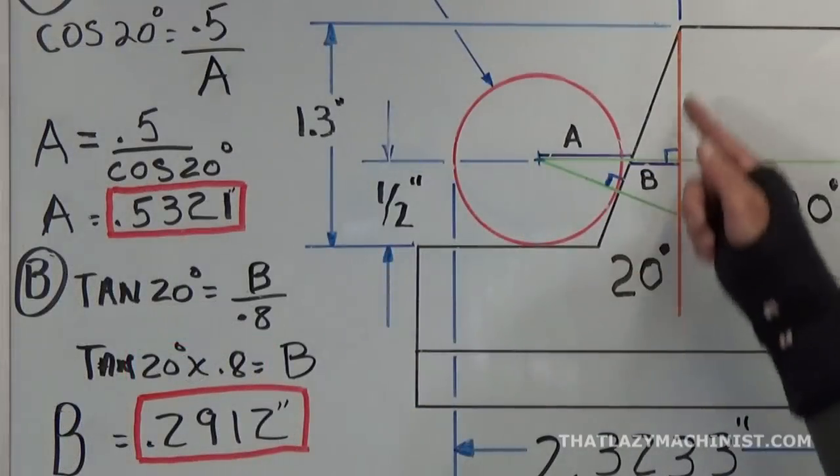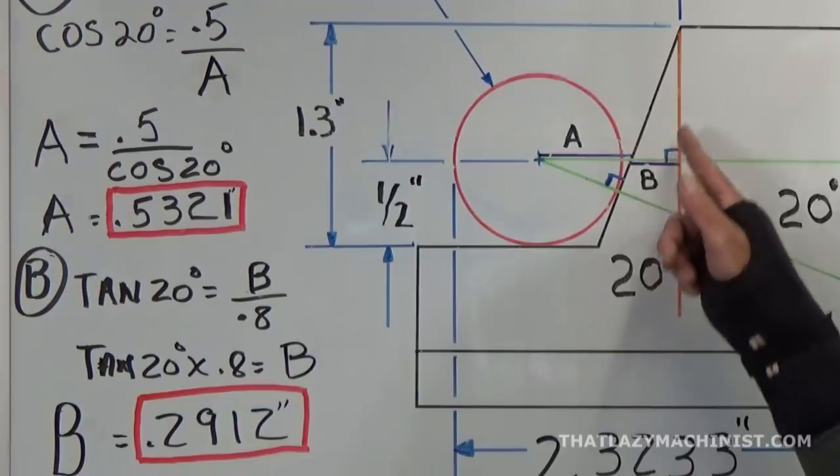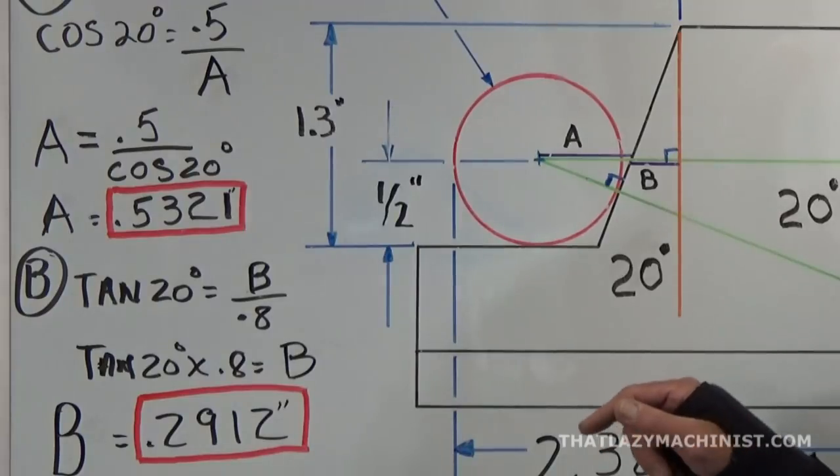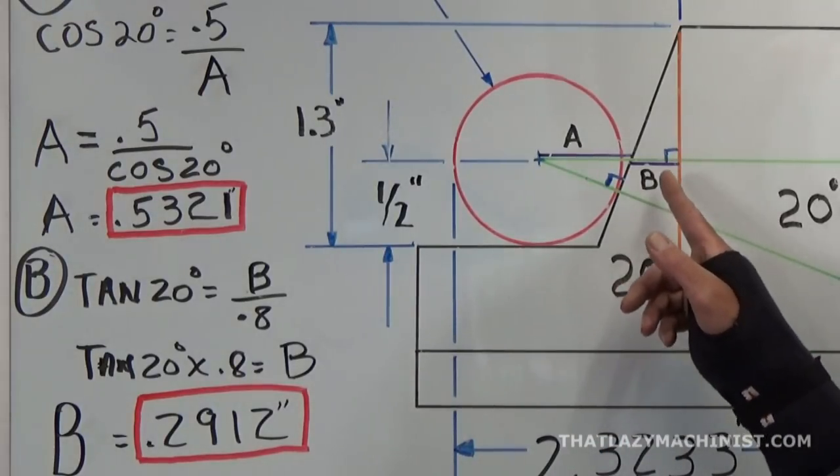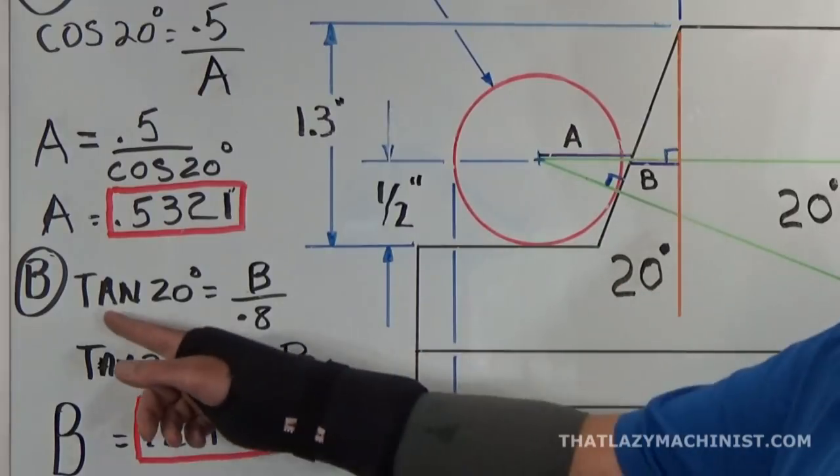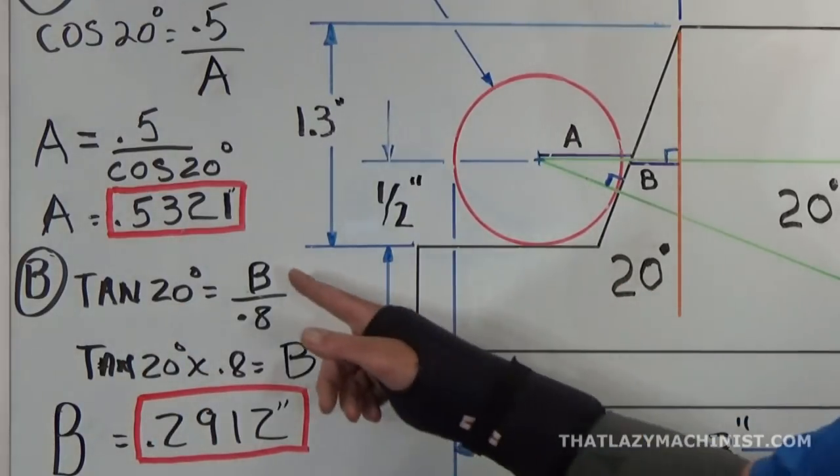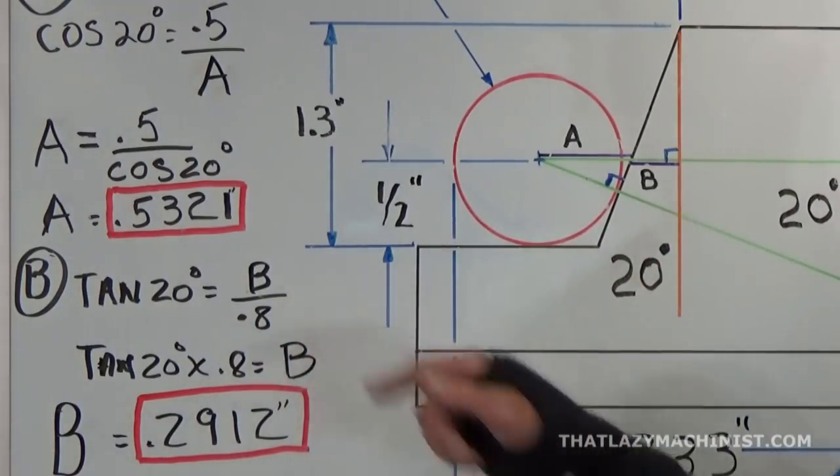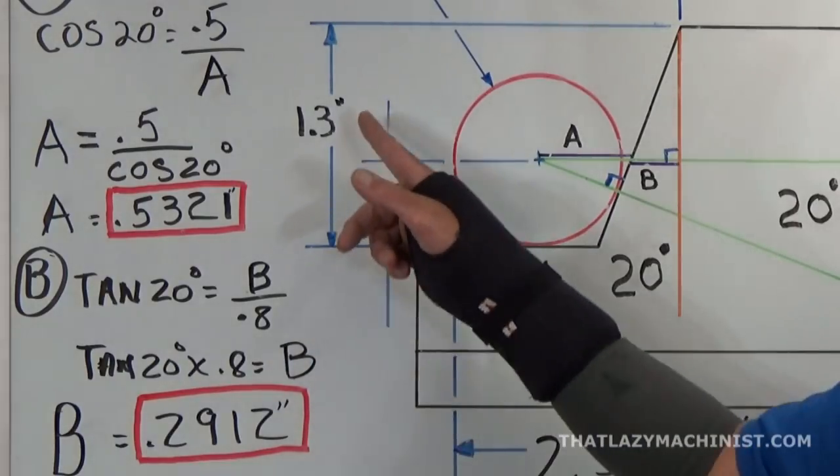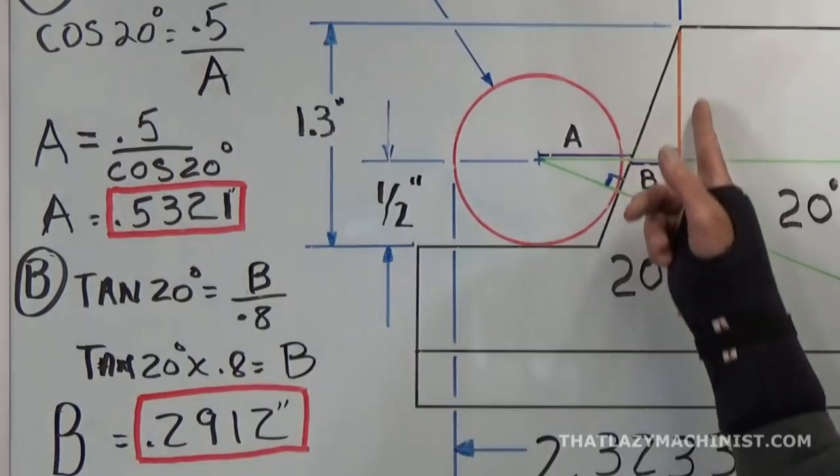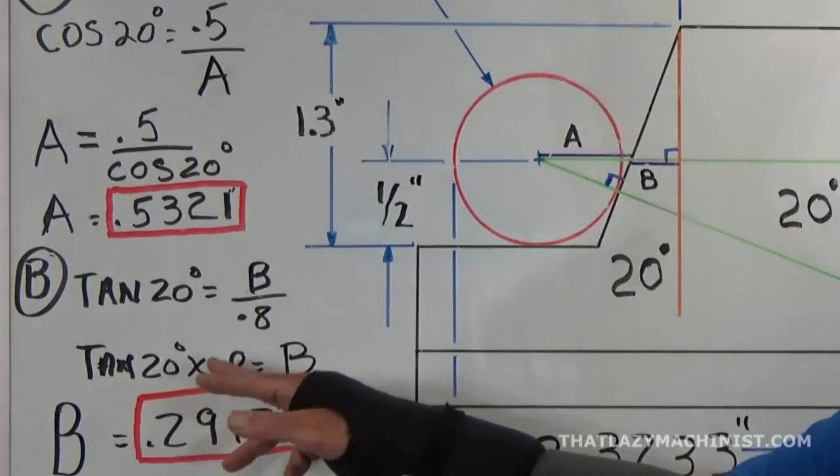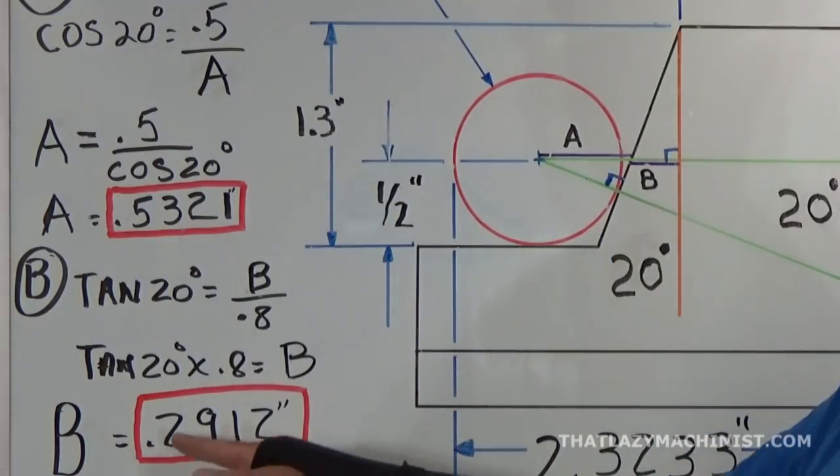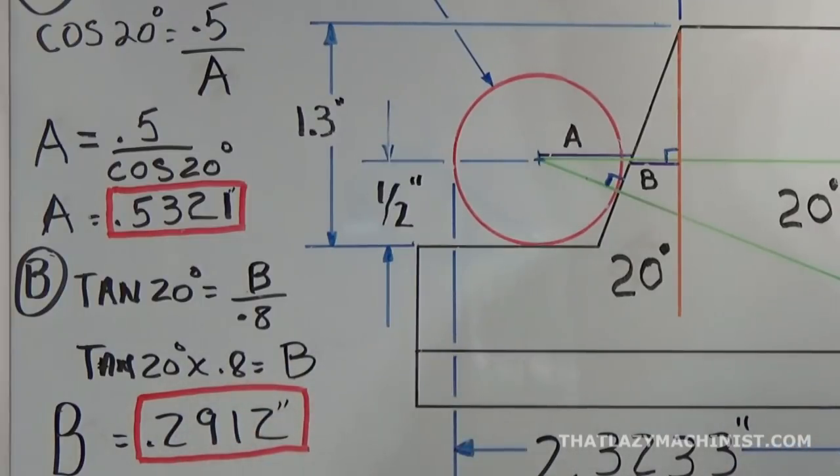B here is the opposite side of a right angle triangle, a 20 degrees right angle triangle, and we know the adjacent side. So we're going to be using tan or tangent to calculate B by saying tan of 20 degrees equals opposite B, which is what we're looking for, divided by adjacent, which is 0.8. 0.8 because we have 1.3 minus 0.5 and that gives us 0.8. So tan 20 degrees times 0.8 equals B. And that means that my short section here, B, is equal to 291 thousandths of an inch.